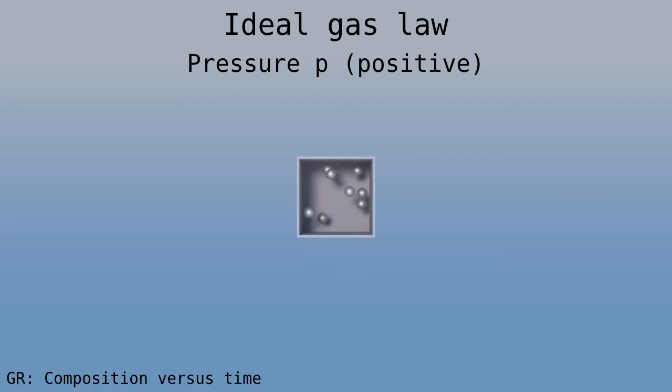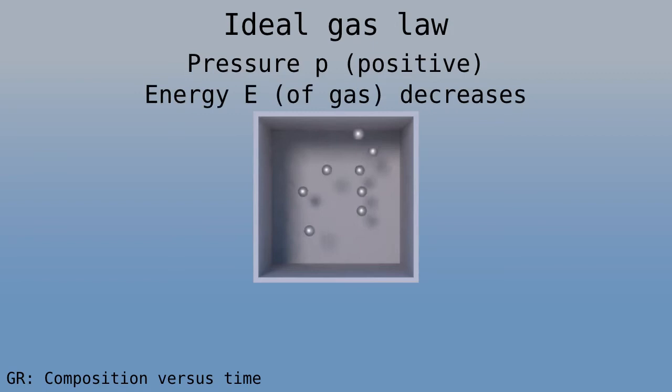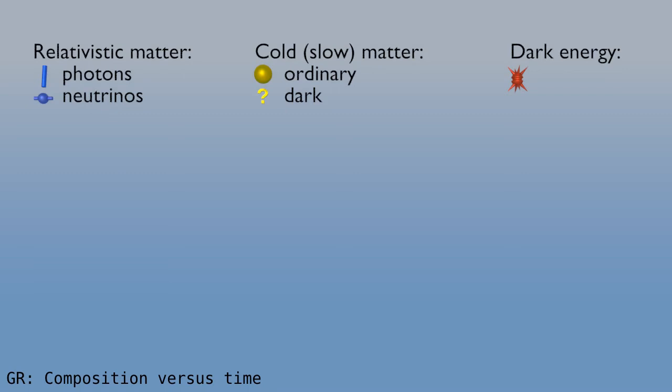Now, the composition changes over time. How does this happen? Well, let's use a little bit of high school chemistry, like the ideal gas law. The gas in a box has a pressure, a force on the walls, and a total energy. If the box expands, the gas does work on the walls, and the energy for that work is taken from the gas. Now, let's see how this works for the three types of mass energy.